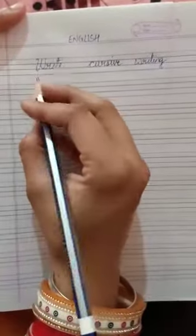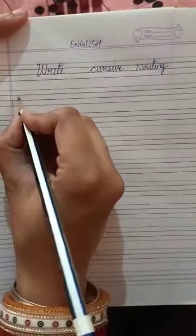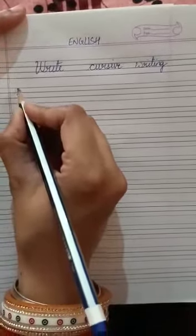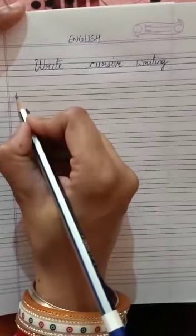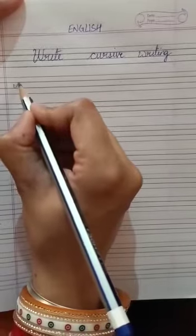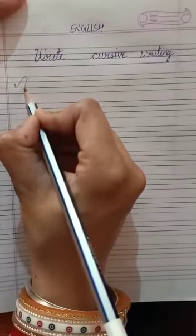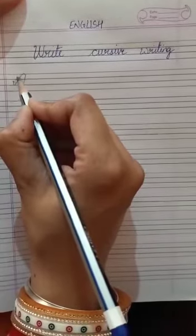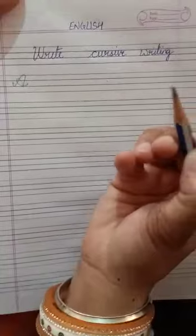So we will start with capital A. First we are going to take from the midpoint. This is the midpoint between the four lines. Then from there we are going to make this stroke downwards. First we are going to come downwards, then upwards, then again downwards. Then we are going to fold it like this. So this is our cursive A.